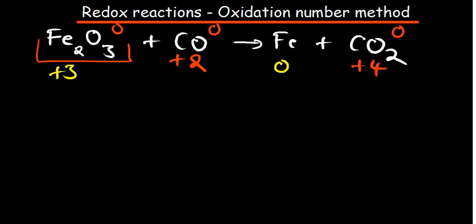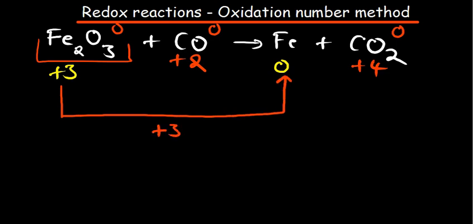Let's observe the changes in oxidation state. For iron, we're moving from plus 3 to 0 — the change is 3. For carbon, we're moving from plus 2 to plus 4 — the change is 2.